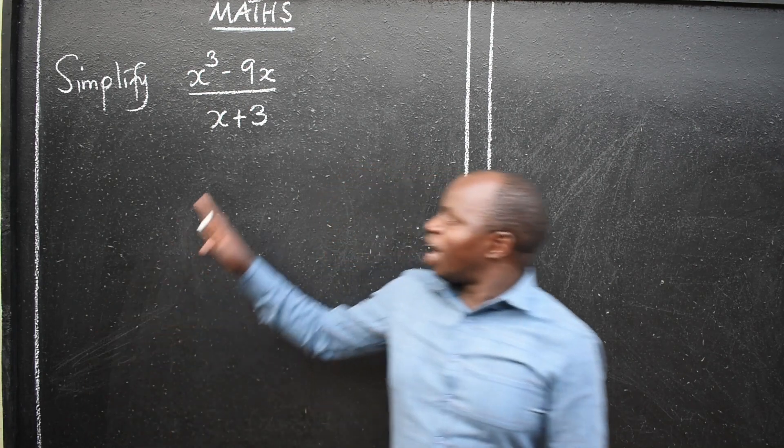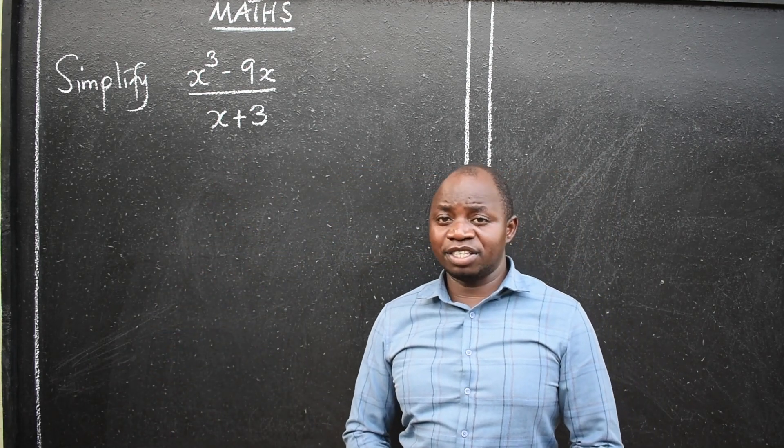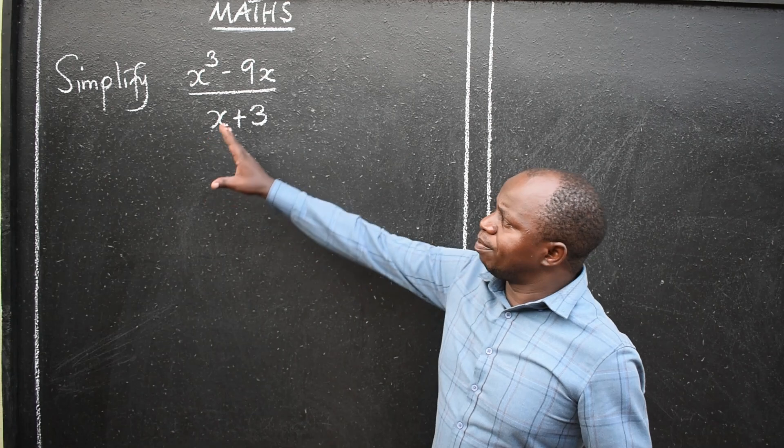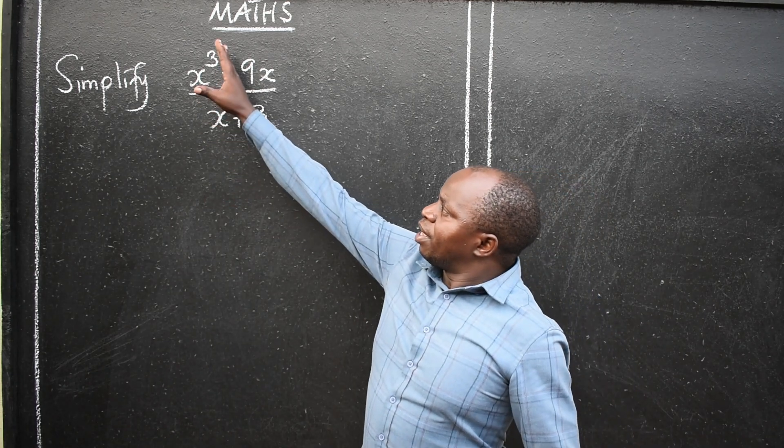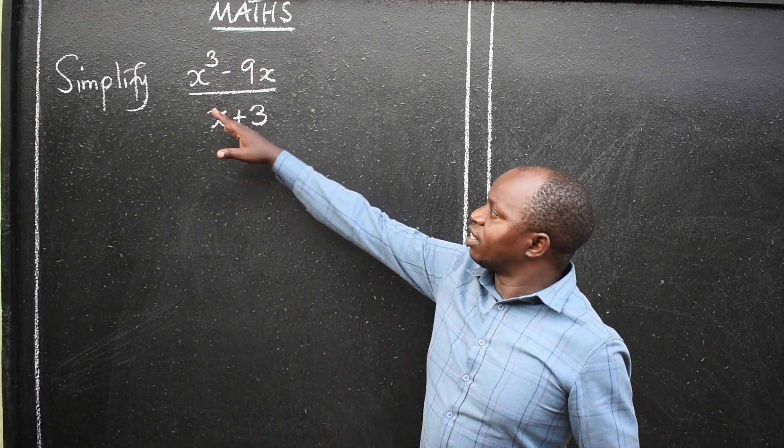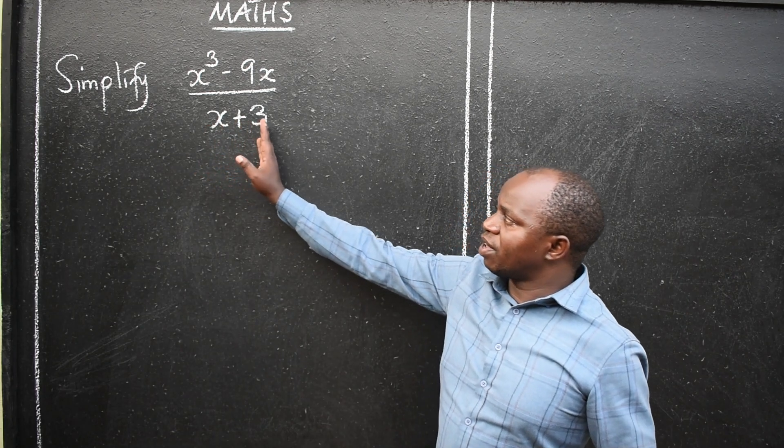Greetings learners. We have a question here. This is mathematics. Simplify x to the power 3 minus 9x divided by x plus 3.